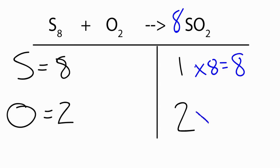And then two times eight, that gives us sixteen oxygens. So that's not what we want there, but we can easily fix that by putting an eight in front of the oxygen.